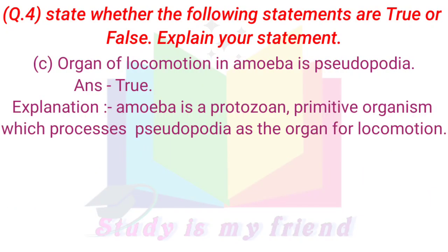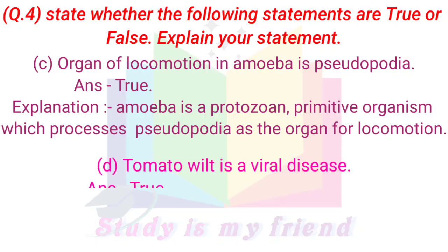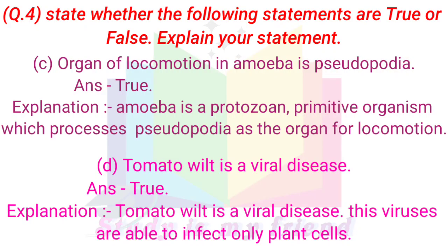C. Organ of locomotion in amoeba is pseudopodia. Answer: True. Explanation: Amoeba is a protozoan primitive organism which possesses pseudopodia as the organ for locomotion. D. Tomato wilt is a viral disease. Answer: True. Explanation: Tomato wilt is a viral disease. These viruses are able to infect only plant cells.